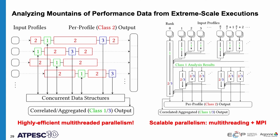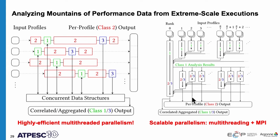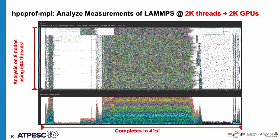We're applying massive parallelism to analyze extreme-scale executions using a strategy my student Jonathan Anderson calls streaming aggregation — streaming profiles through memory and accumulating results in concurrent data structures. Across different MPI ranks, we take locally accumulated results and reduce them to get the final answer. In an example using HPCProf MPI to analyze performance data for the LAMMPS molecular mechanics code from Sandia, we measured 2K threads plus 2K GPUs and were able to analyze 38 gigabytes of performance data in 41 seconds.